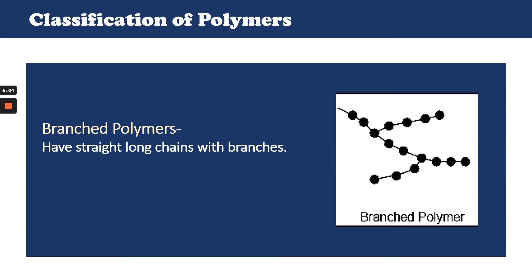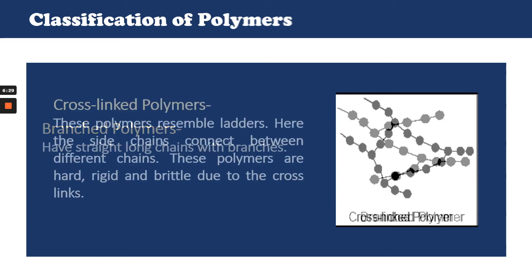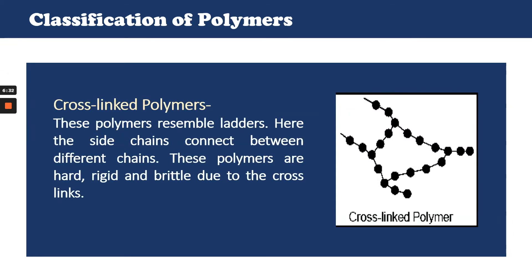Branched polymers, on the other hand, have straight long chains with branches in between. These branches are known as side chains and they can also be made of very long groups of repeating structures. Polymers which have many branches are known as dendrimers and these molecules could form a web-like structure when cooled. When heated, both linear and branched polymers soften. Cross-linked polymers are those that resemble ladder-like structures because the side chains connect different long chains put together. These polymers are hard, rigid, and brittle because of the cross-links between them. An example of a cross-linked polymer is vulcanized natural rubber, which is heated along with sulfur molecules.